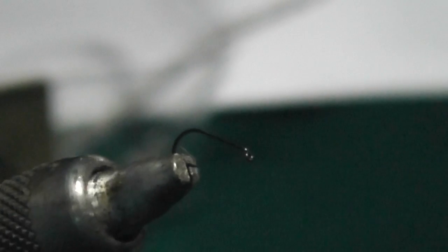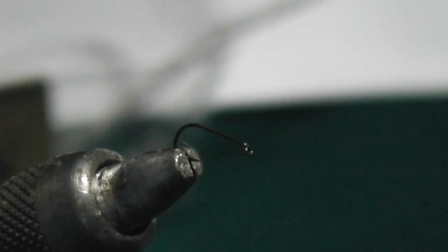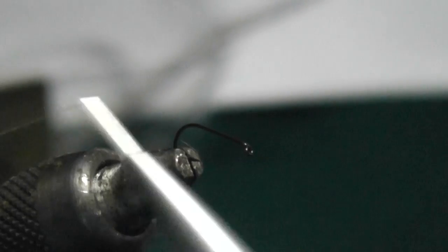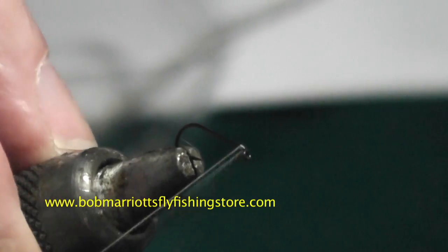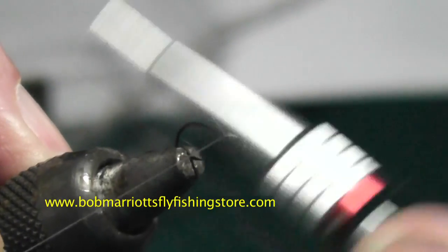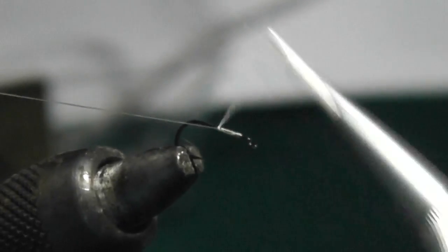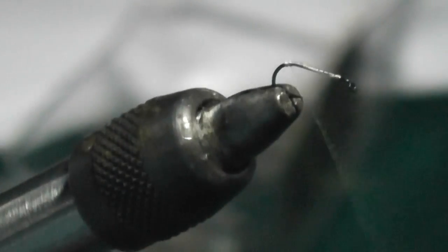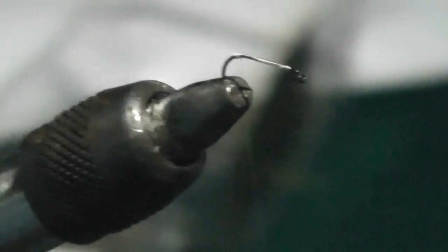Again, you can see I'm using a very wide gape hook, because I want that hooking capability. And again, I'm going to use the cream thread, and we're going to start off just exactly like we did before, nothing changed. Again, I'm going to do a little build up, and I'm going to use some soft material for the tail.